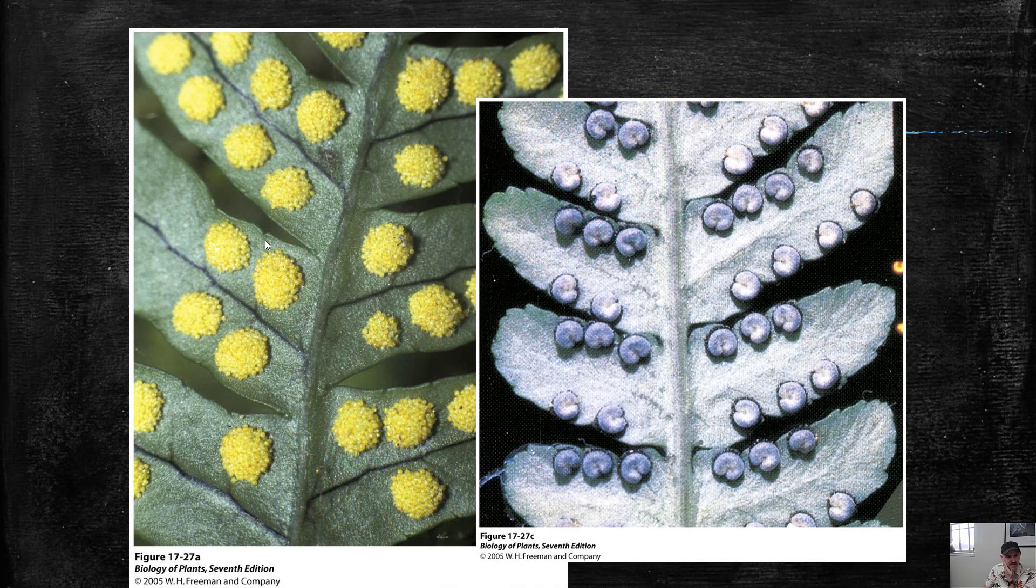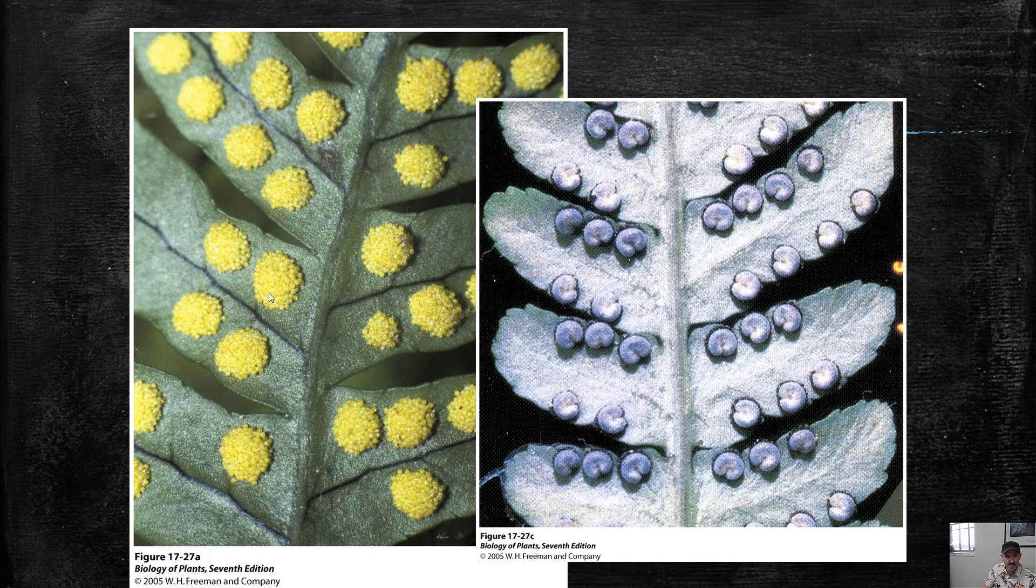Here we see sporophylls. These are fern leaves with sporangia on the bottom. See these circles? Each one of these big circles, this circle is called a sorus. And each one has probably like 60 or more sporangia in it. So there are tons of sporangia in each of these sorus. And then each sporangium makes a bunch of spores by meiosis.